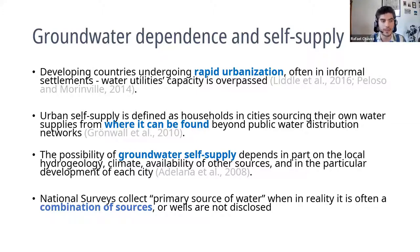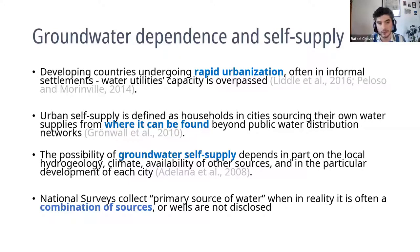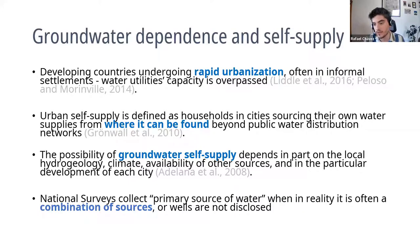And this is how we defined self-supply. This can come either from wells in the backyards, buying water from a neighbor who has a borehole, or from vendors — there are many strategies out there. Those that can use groundwater really depends on the local hydrogeological conditions, on the climate, on availability of other resources, and how the city was developed.